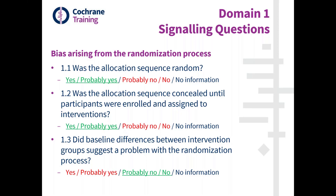In most cases the answer will be no or probably no to this question. It will be on rare occasions that you see baseline imbalance as an indicator that something may have gone wrong. In some implementations of the ROB2 tool, text formatting is used to indicate which answers reflect good features and which reflect bad features — green underlined text for good features, red text for bad features, and normal colour text for no information.